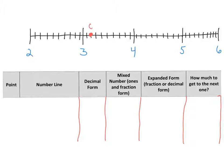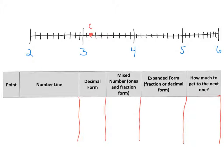So we know that our whole number is going to be three, and our mixed number is going to start with three — then this part is going to be the fraction. Let's see how much is in between the two wholes of three and four. We count one through ten — this is the next whole, ten-tenths. So point C is at three and two-tenths.